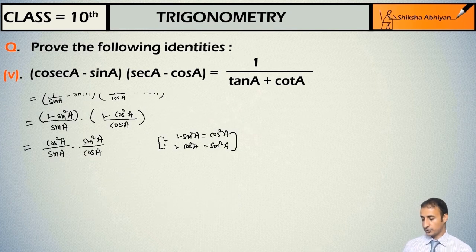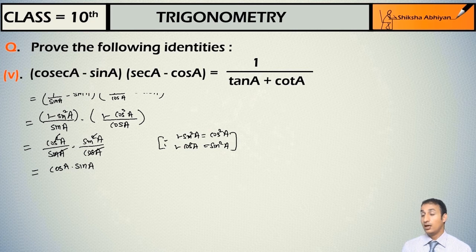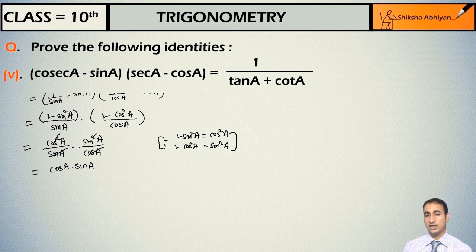Now students, cos²(a) and cos(a) cancel, and sin²(a) and sin(a) cancel. What you get is cos(a) multiplied by sin(a). Now we cannot solve this directly any further, so what we do is take the RHS, solve it, and bring it equal to cos(a)·sin(a).